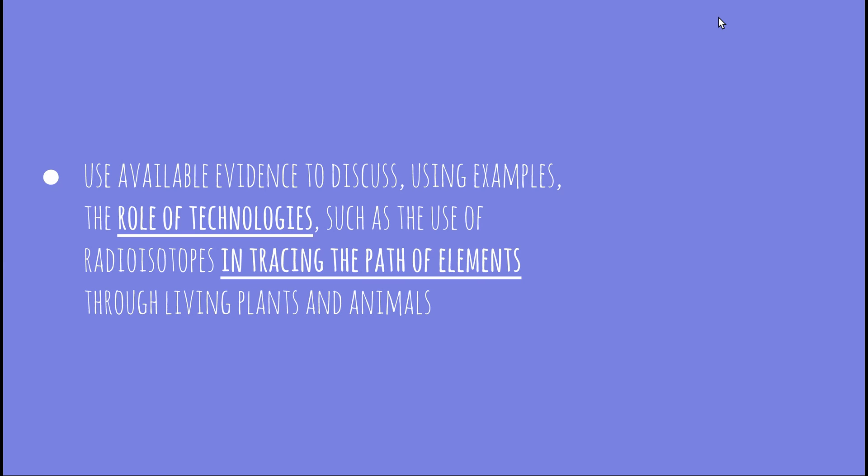This video will be looking at the dot point: use available evidence to discuss, using examples, the role of technology such as the use of radioisotopes in tracing the path of elements through living plants and animals. This video will provide you with some background information and you'll need to find more information to find examples of technologies, in particular radioisotopes in tracing the path of elements through living plants and animals.